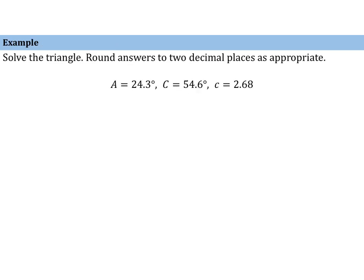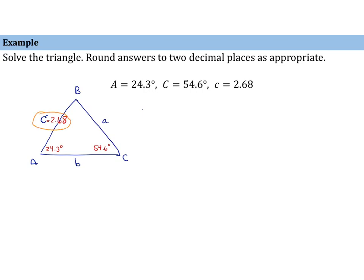Let's take a look at an example. I'll first draw a sketch — it does not have to be to scale. I'm just going to do this to make an inventory. So we have triangle ABC with sides opposite. We know that angle A is 24.3 degrees, angle C is 54.6 degrees, and side c is 2.68. We notice that we have an angle-side pair: we have a C and a c. Therefore we can use the law of sines here. In fact, what we have is angle-angle-side.